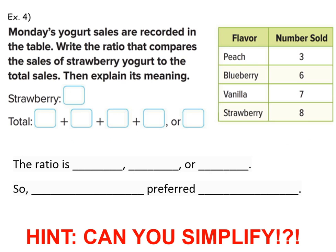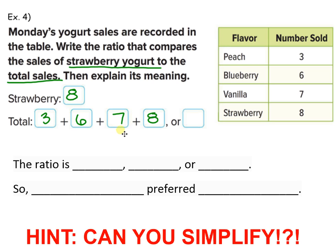Let's try another example — example number four. Monday's yogurt sales are recorded in the table. Write the ratio that compares the sales of strawberry yogurt to the total sales, then explain its meaning. We need to find strawberry — that's eight for strawberry. Now we need to calculate the total number sold: three plus six plus seven plus eight. Three plus six is nine, nine plus seven is 16, 16 plus eight is 24. Write it as a fraction: eight over 24. Is that as simplified as possible? Not quite.